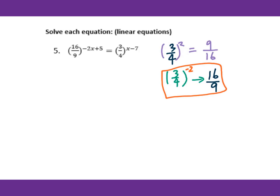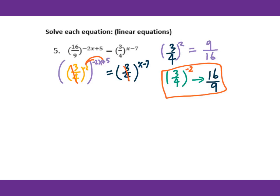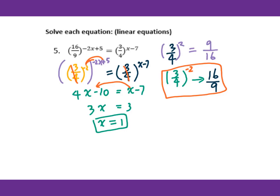We change 16 over 9 into 3 over 4 to the negative 2nd power. Then we apply the distributive property: negative 2 times (2x plus 5) equals x minus 7. We get 4x minus 10 equals x minus 7, then 3x equals 3, so x equals 1. For solving linear equations, remember to isolate the variable.